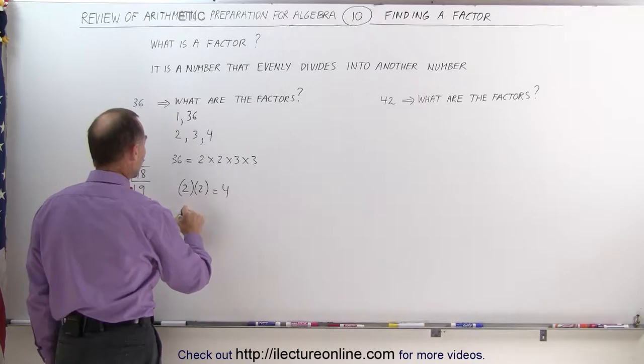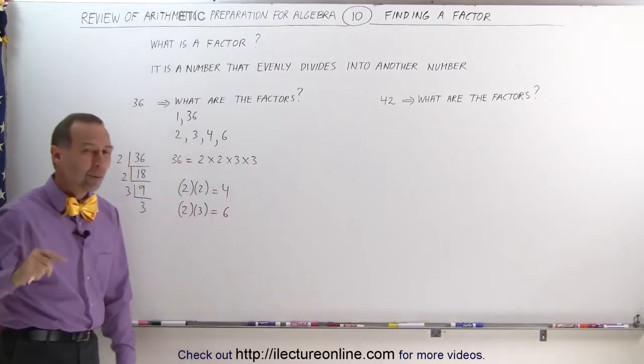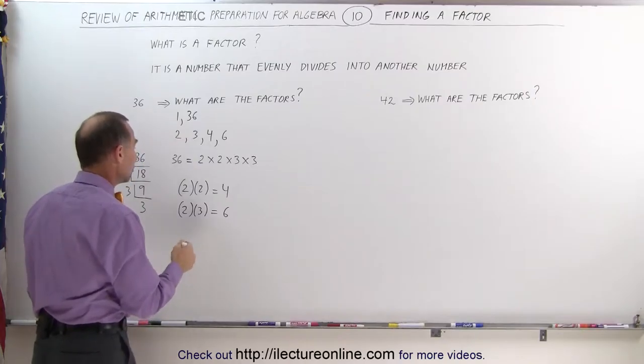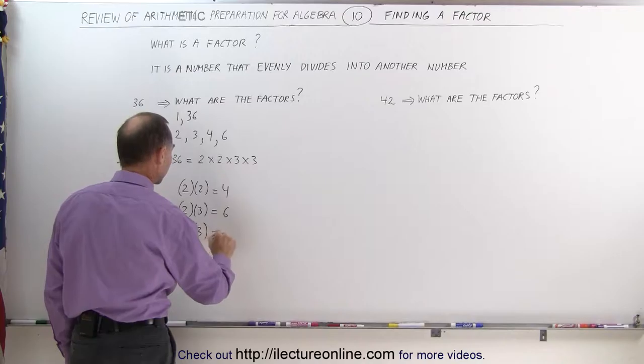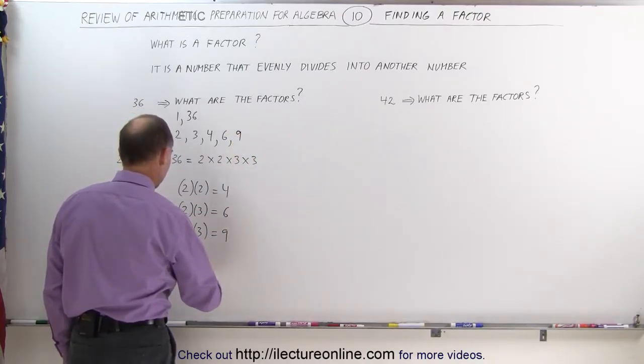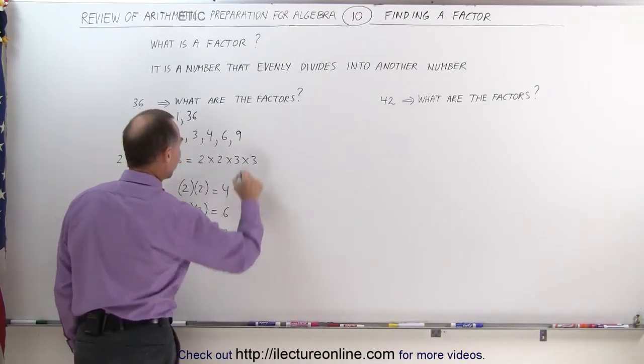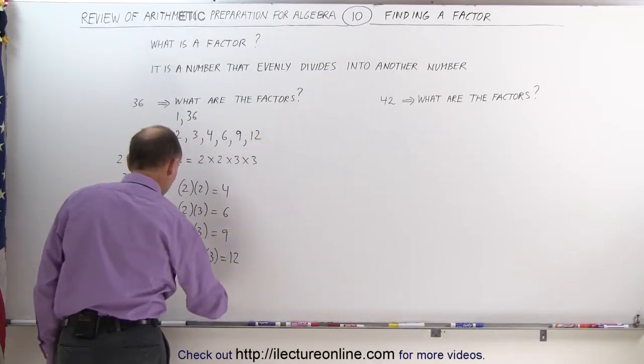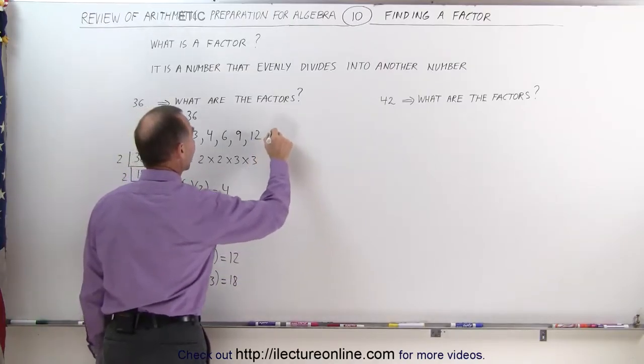You can multiply 2 times 3, that gives you 6. 6, therefore, is also a factor. So what we're trying to do here is multiply any combination of these numbers, which means we can also multiply 3 times 3. That will also give us a factor, the number 9. And we can multiply 2 times 2 times 3, that's 4 times 3, which is 12, which is also a factor of 36. We can multiply 2 times 3 times 3, which is 18, and that's also a factor of 36.